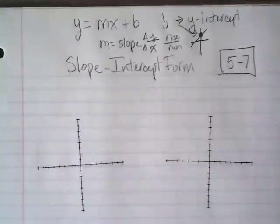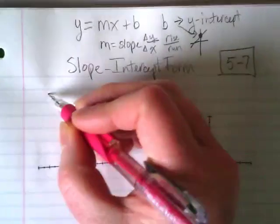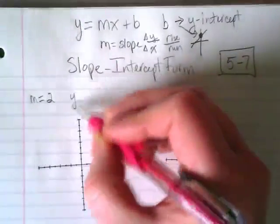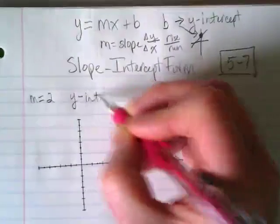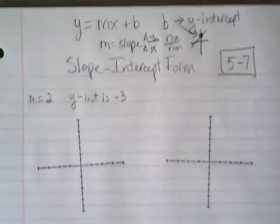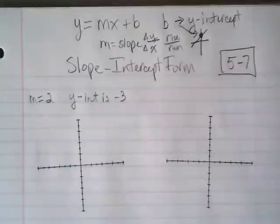Okay, you're going to have some problems today where you're being given the slope and the y-intercept, and you're going to be expected to graph it. So if I tell you that on this graph the slope is 2 and the y-intercept is negative 3, what would you start with to graph? Negative 3. We always want to start with the y-intercept.